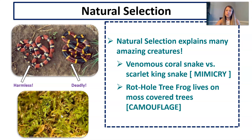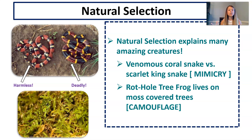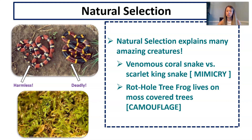Natural selection also explains camouflage. This is a picture of a rot hole tree frog — can you find him? He lives on moss-colored trees. The rot hole tree frogs that looked more like the moss covering the trees were more likely to survive and reproduce, until now we have an entire population of frogs that looks a lot like moss sitting on a tree.